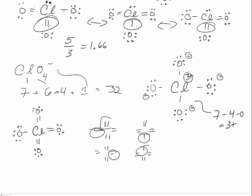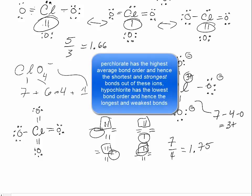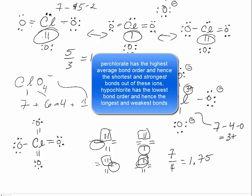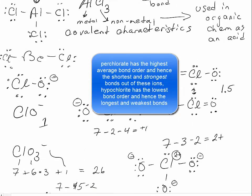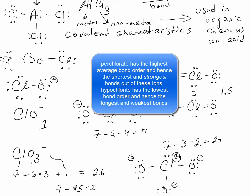Focusing on one of those bonds, what's the average bond order? Two plus two plus two plus one is seven over four or one point seven five. So in looking at all of these, perchlorate has the shortest bonds and the strongest bonds. Hypochlorite has the longest bonds.